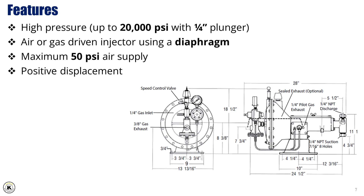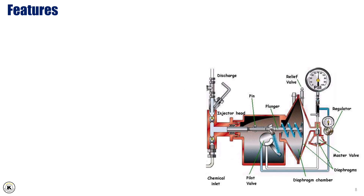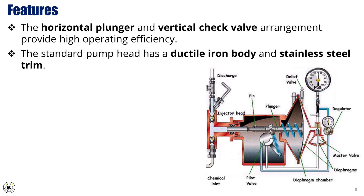As a positive displacement pump, it delivers precise and consistent chemical dosing regardless of pressure changes in the system. In well testing operations, the pump is primarily used to inject treatment chemicals such as corrosion inhibitors, scale inhibitors, or demulsifiers directly into the flow line. It can also be employed for pressure testing equipment, ensuring system integrity before and during testing activities. The TechSteam pump features a horizontal plunger and vertical check valve arrangement, which together deliver high operating efficiency, making it suitable for a wide range of well site applications.